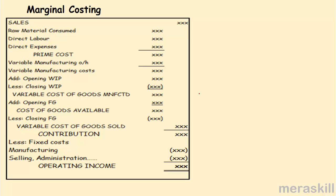Now we construct a cost sheet under marginal costing. You have sales, then raw material, direct labor — exactly as in absorption costing — plus variable manufacturing overheads only, to get the variable manufacturing cost. Opening WIP and closing WIP are valued only at variable manufacturing cost, giving the variable cost of goods manufactured. Add opening finished goods to get cost of goods available, less closing finished goods valued only at variable cost, to get the variable cost of goods sold. Deduct this to arrive at contribution, then less fixed costs of manufacturing, selling, and administration to get operating income.